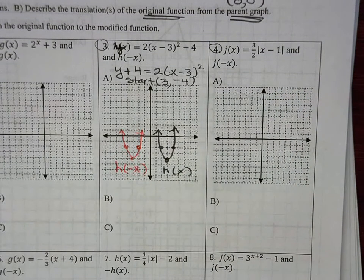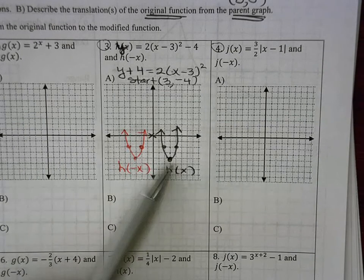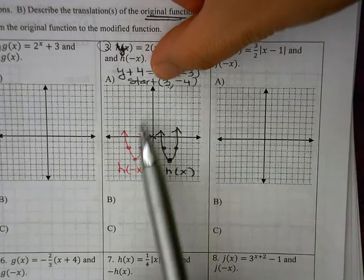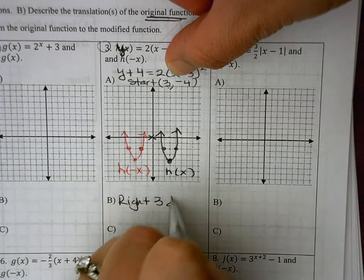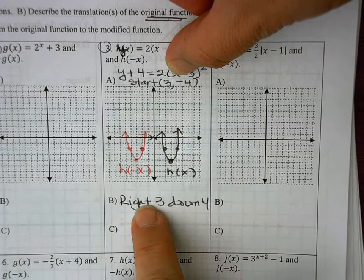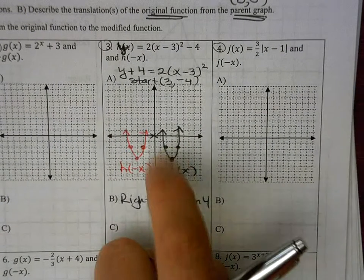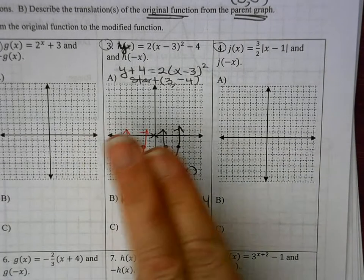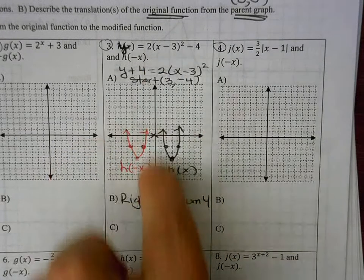For part b, describe the translation from the parent graph: the parent graph starts at 0, 0. My h was positive 3 and k was negative 4, meaning I went right 3 and down 4. Positive means right, negative means down. For part c, the reflection: I made all positive x's negative, so positive x's became negative — I'm flipping horizontally, which means the graph is reflected across the y-axis.